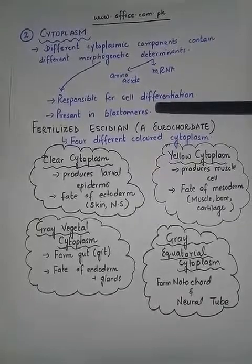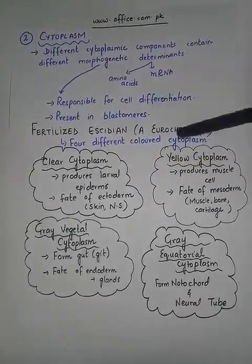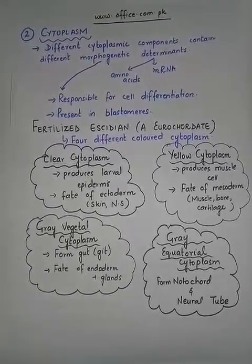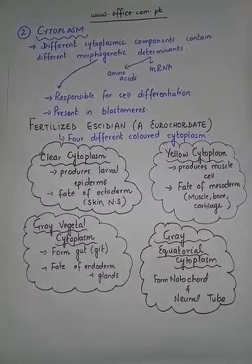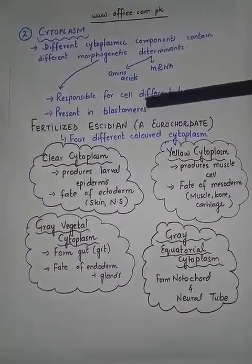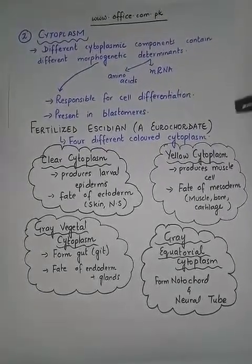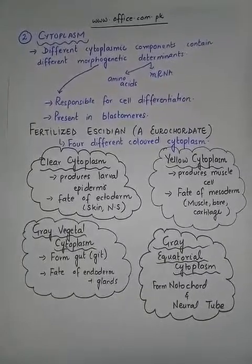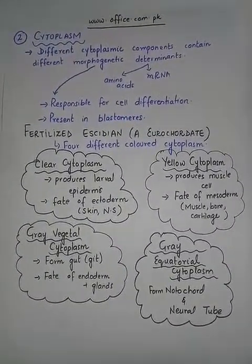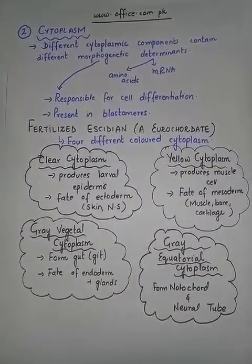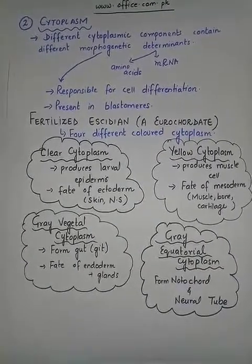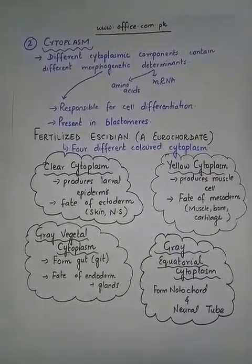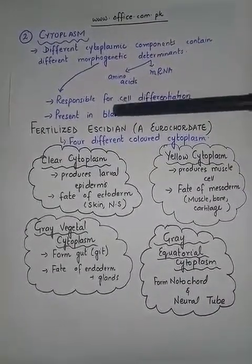These determinants are present in the blastomere. To study the role of cytoplasm on development and differentiation, the fertilized egg of Ascidian was studied. Ascidian is a lower chordate — a urochordate — and it was studied for convenience, since developmental stages are almost common in all organisms, with only little differences due to differences in species.